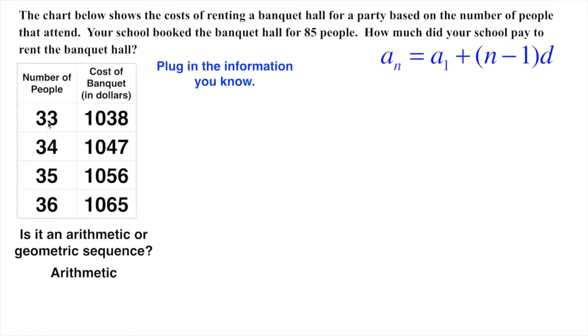But we do know what the 33rd term is. The 33rd term is 1,038. So with that knowledge, what we can do is start plugging in a of n. We know a of n is going to be 1,038. This would be a of 33 here.